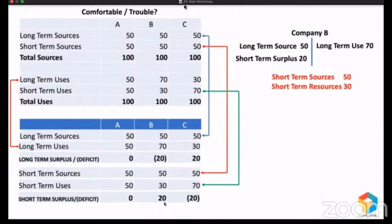They simply diverted 20 million for a long-term purpose. So within one year they are supposed to repay 50 million, but they only have 30 million in resources. Whoever gave that 20 million will go for legal action against this company for not fulfilling the obligation. Company B will not be in a position to fulfill the promise because that 20 million was invested in long-term assets — land, building, plant, and machinery — and you cannot sell them just like that. It will take more than a year, but creditors will not wait. That's why we say Company B is in trouble.